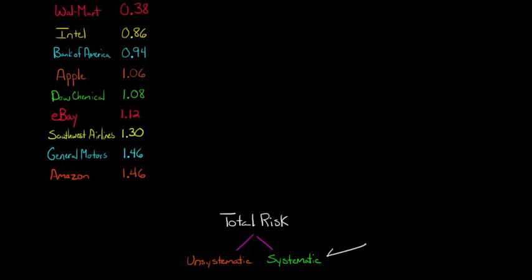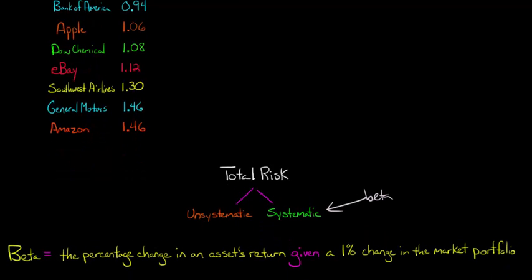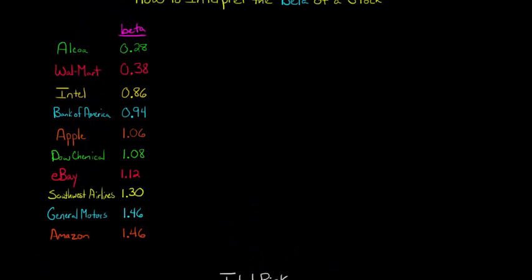And beta is a measure of this systematic risk. So for a 1% change in the market portfolio, if the market portfolio were to go up 1%, beta is the percentage change in the stock's return. So let's apply this to an actual firm.